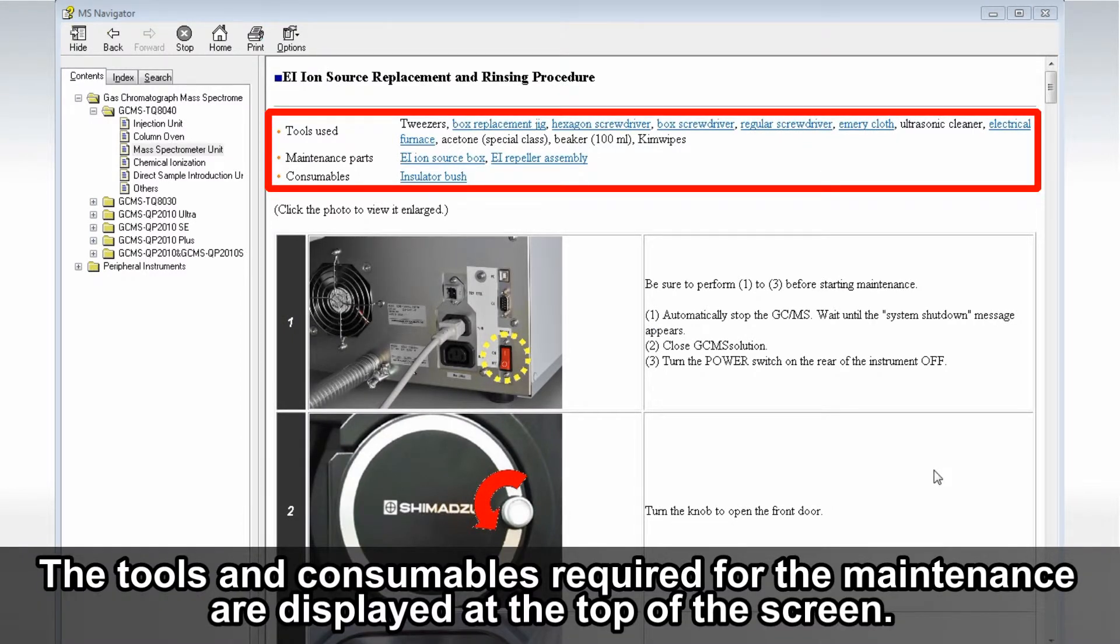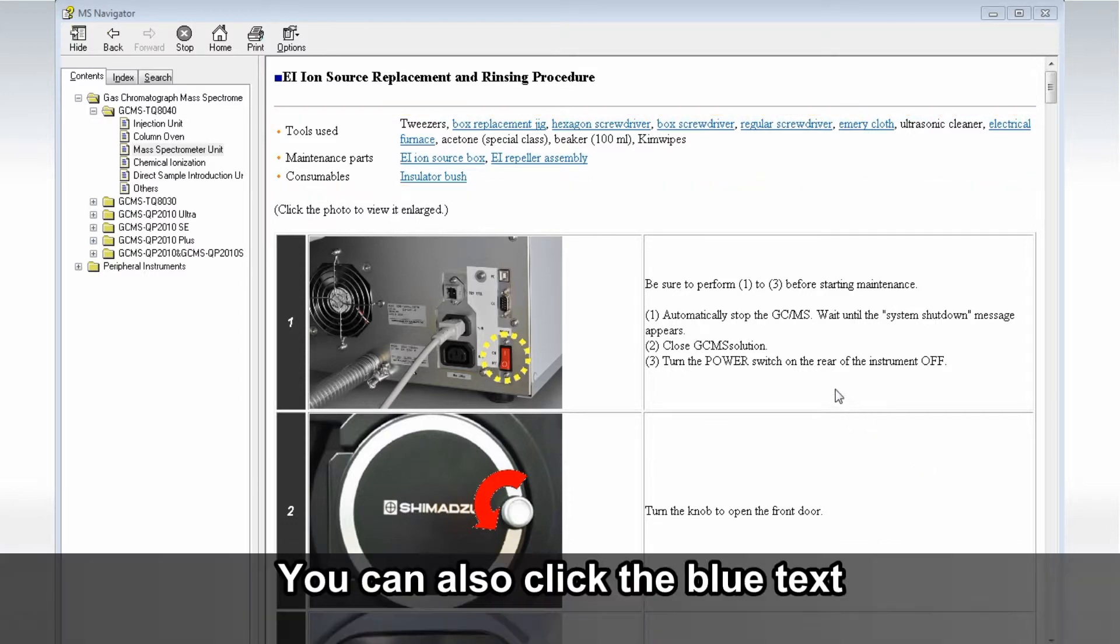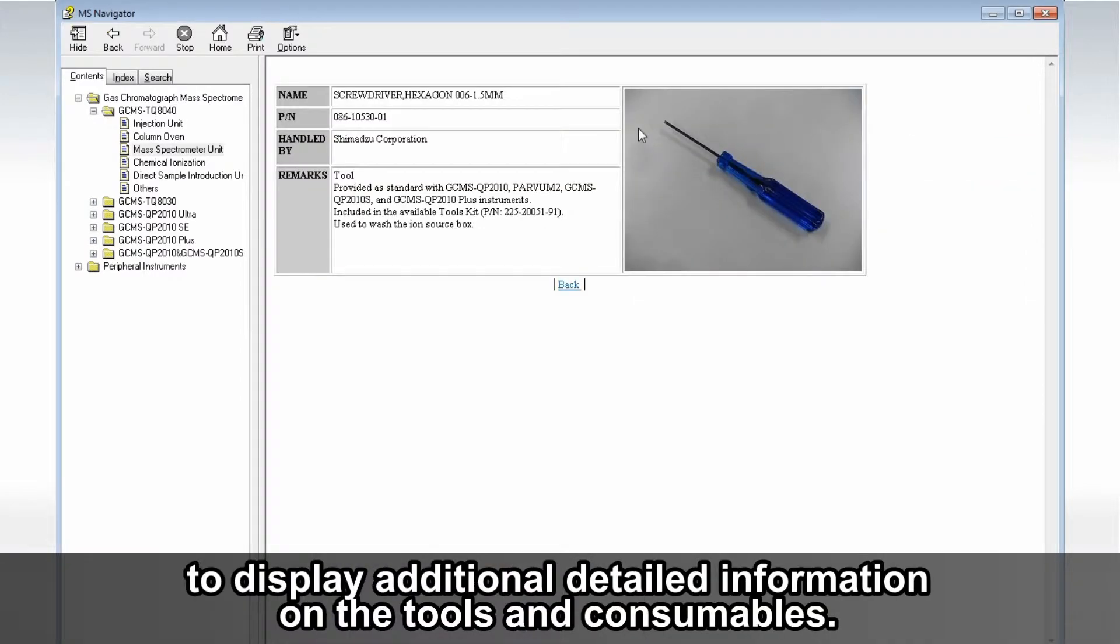The tools and consumables required for the maintenance are displayed at the top of the screen. You can also click the blue text to display additional detailed information on the tools and consumables.